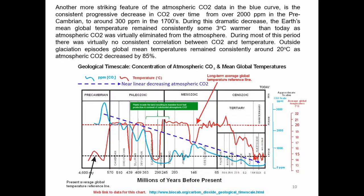Another striking feature of the atmospheric carbon dioxide data is the consistent progressive decrease in CO2 over time from over 2,000 ppm in the pre-Cambrian to around 300 ppm in the 1700s. During this dramatic decrease, the Earth's mean global temperature remained consistently some 3 degrees warmer than today as atmospheric CO2 was virtually eliminated from the atmosphere. Outside glaciation episodes, mean global temperatures remained consistently around 20 degrees centigrade as atmospheric CO2 decreased by 85%.